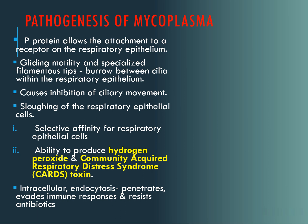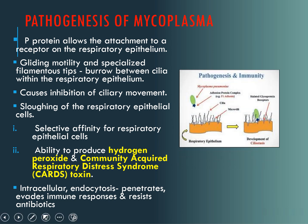Pathogenesis of mycoplasma: for attachment, mycoplasma has a unique protein called the P1 protein, because of which it attaches to receptors on the epithelial cells of the respiratory tract. They exhibit gliding motility and have special filamentous tips, because of which they can burrow in between the cilia present in the respiratory epithelium. They cause inhibition of ciliary movement — ciliostasis — and also cause necrosis in the respiratory epithelial cells.